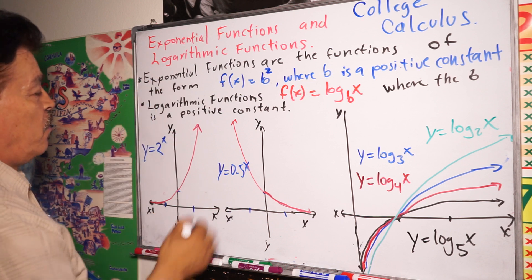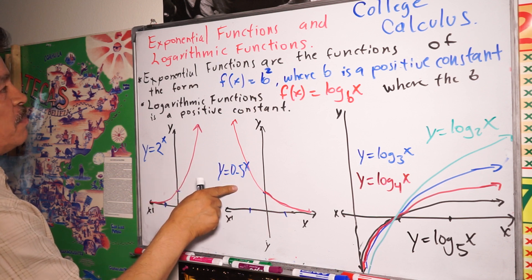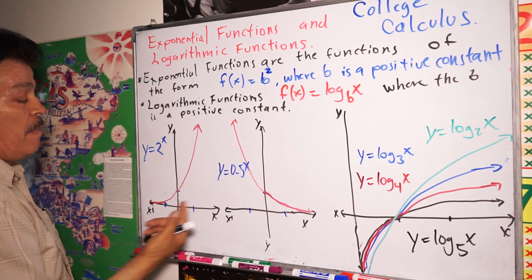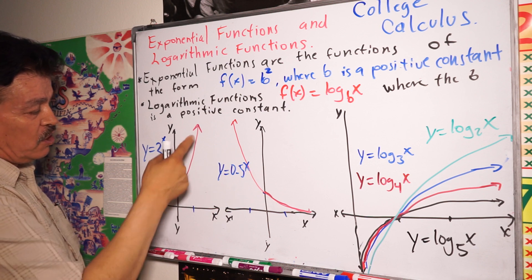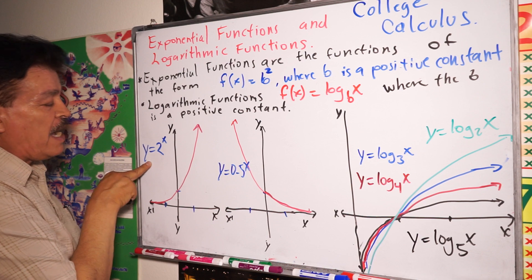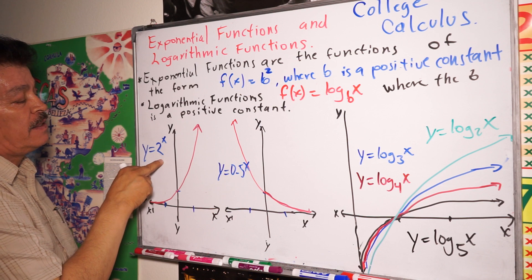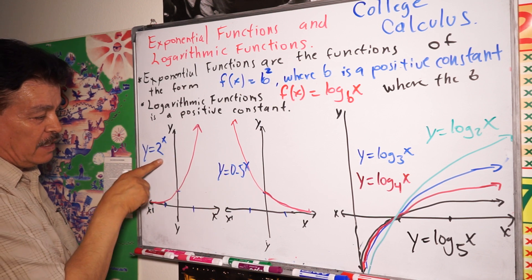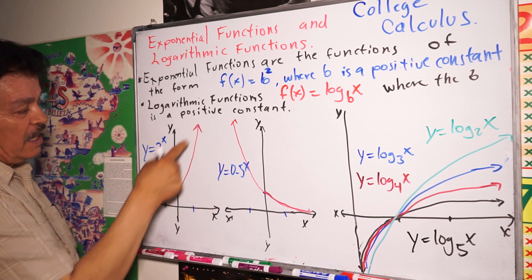For example, graph number one — look at this. These two first graphs are exponential functions; these two graphs show exponential growth. Look at the first graph — it's y equals 2 to the x power. When y equals 2 to the x power, the number is bigger than the second one.